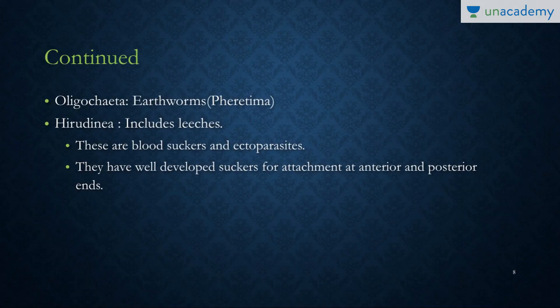Second, we have the Oligochaetes, which are basically the earthworm Pheretima and its relatives. The scientific name of the earthworm you need to remember is Pheretima posthuma.